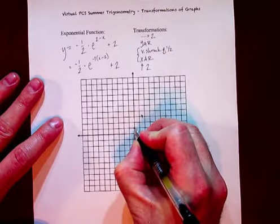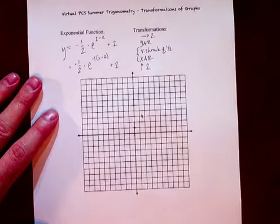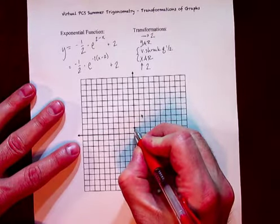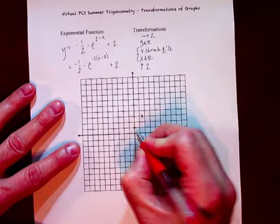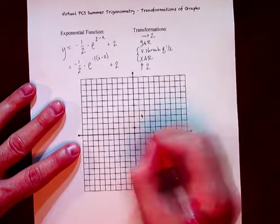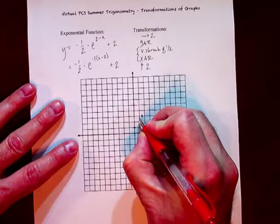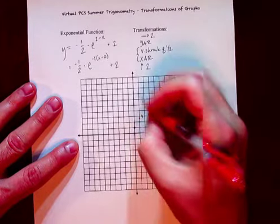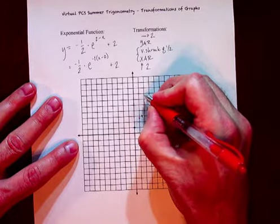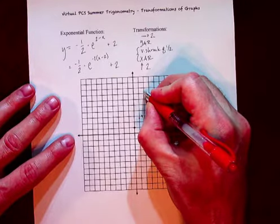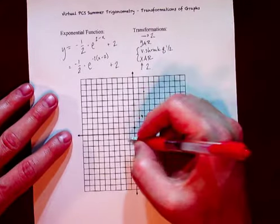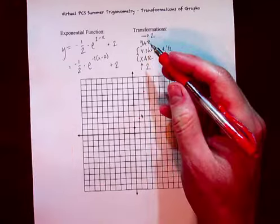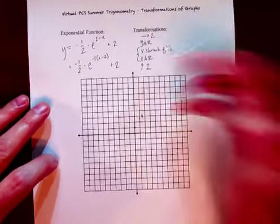Remember all exponentials go through zero one, because everything to the zero power is one. So when we're doing the parent function, that's easy enough. E is about 2.7. E squared is about 7.3. And E cubed is 20.1 — so it's just a smidge above 20.